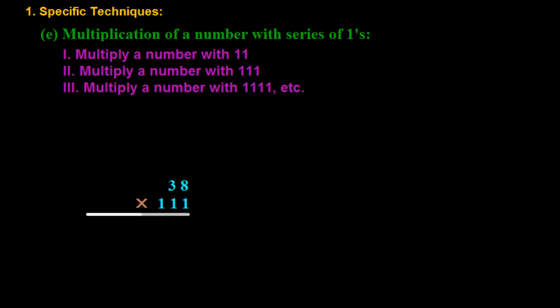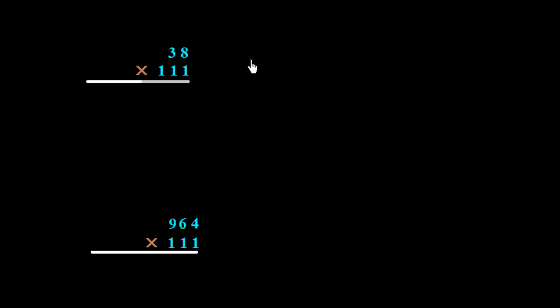Let me explain with an example how we will solve this. First of all, we have to multiply a two-digit number with 111. So if you have 38, I write down here 0, 3, 8 and draw a line under which we have to write down the answer.